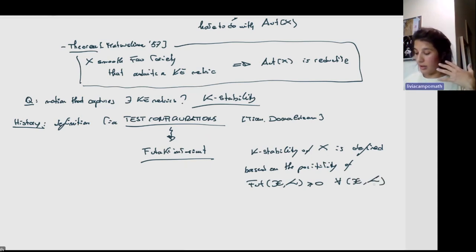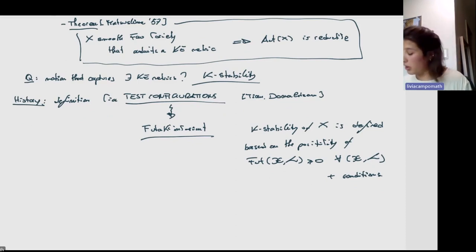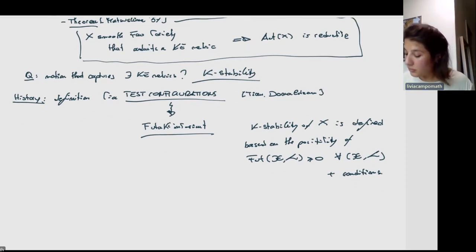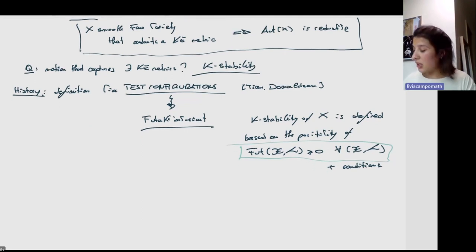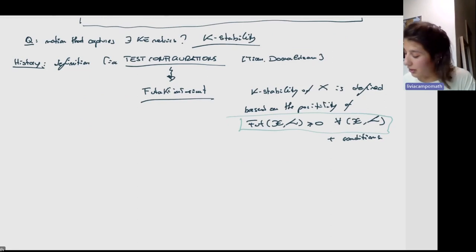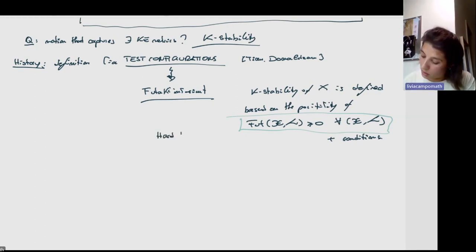The problem with this definition is that in order to prove K-stability of a certain variety, you have to check all possible test configurations, which is very impractical because there could be infinitely many. So this is very hard to check. On the other hand, people — for instance Liu and Xu among others — have managed to restrict the picture from checking all test configurations to checking only special test configurations: the ones where the central fiber is KLT. And here we already start seeing this sounds very much like MMP.